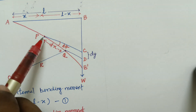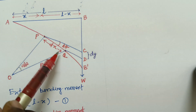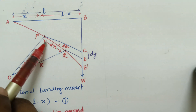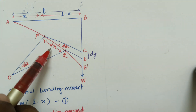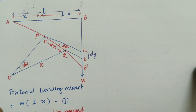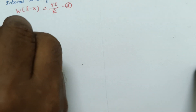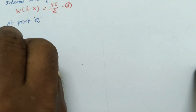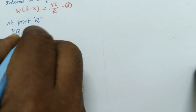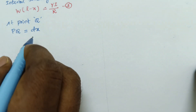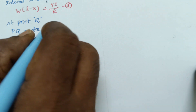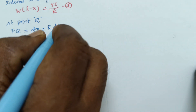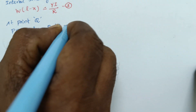The value of PQ is equal to dx, and dx equals — let us consider it as an arc. Arc equals radius times angle, so dx equals R·dθ. This is equation number 4.